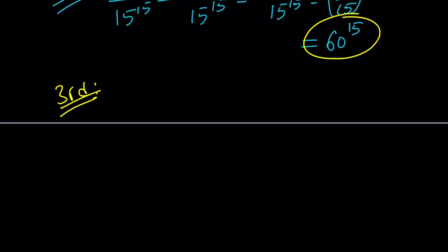Alright, for the third method, obviously we have to go back to the original 30 to the power 30 divided by 15 to the power 15. Here's what I'm going to do. I'm going to go ahead and separate or split this into 30 to the power 15 times 30 to the power 15. Why? Because when you multiply powers with the same base, you add the exponents. So you can do the opposite, right? You can break them down.